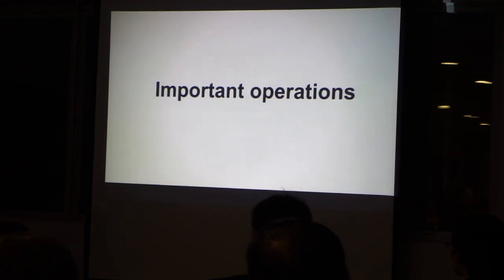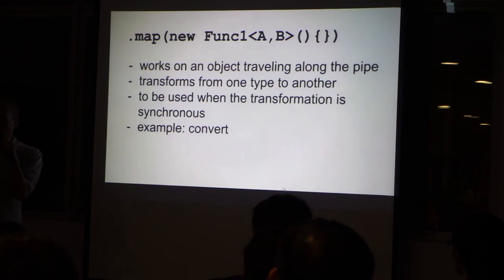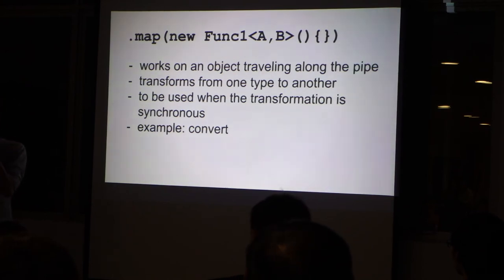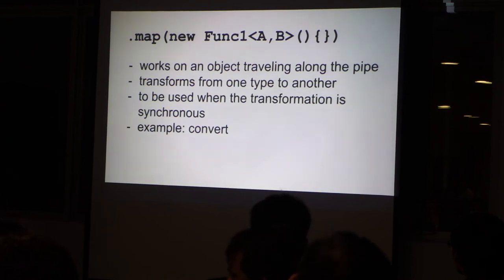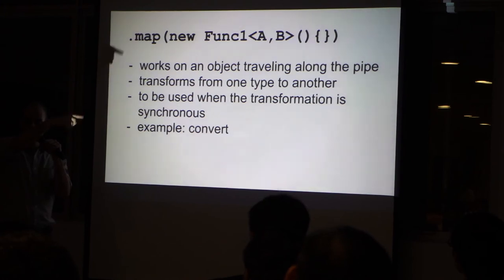So we have the objects. Now it's time to talk about the operations that are available. Have any one of you looked at the streams or optional in Java 8? It's a bit the same notation actually, .map.